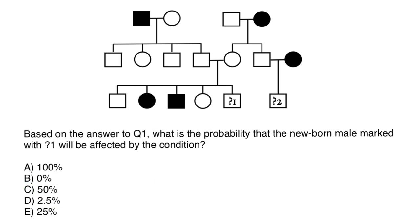Next question: based on the answer to question one, what is the probability that the newborn male marked with question mark one will be affected by the condition? We already found that both parents have to be obligate carriers. The probability for this person to be affected is 25% or one quarter, which is answer E.